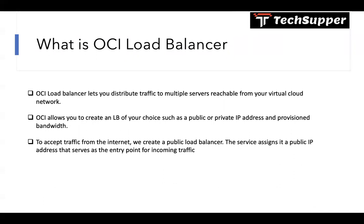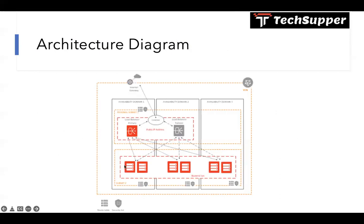Here's an architecture diagram. We have a region with three different availability domains: AD1, AD2, AD3. What we will do is create a regional subnet and deploy our load balancer in that regional subnet. If any AD goes down, we will have a failover load balancer in a different AD. We'll have different compute instances in a single or different subnet, and put those compute instances as backends within the load balancer.